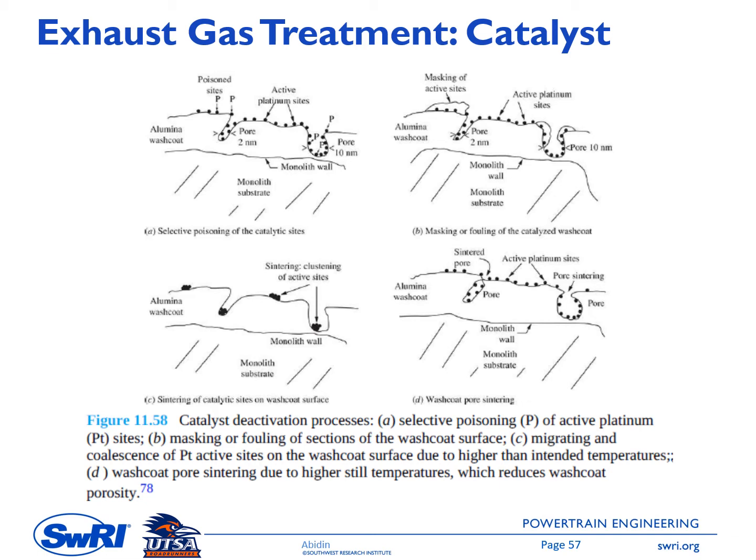This feature illustrates the catalyst deactivation processes — poisoning, masking, and sintering. In feature A, catalyst poisoning occurs, reducing the number of active sites and thus decreasing catalyst activity. In the masking or fouling mode, a portion of the wash coat surface is covered by physically deposited high-molecular-weight HC from sources like oil, oil additives, dust, or corrosion. The third mode, shown in features C and D, is thermal deactivation or sintering.